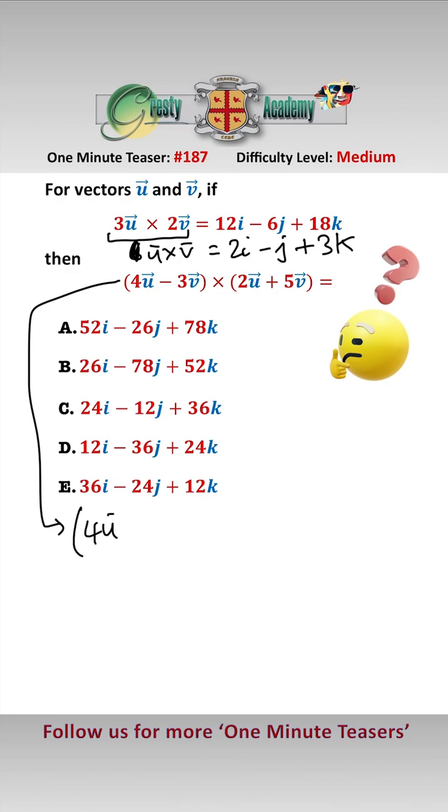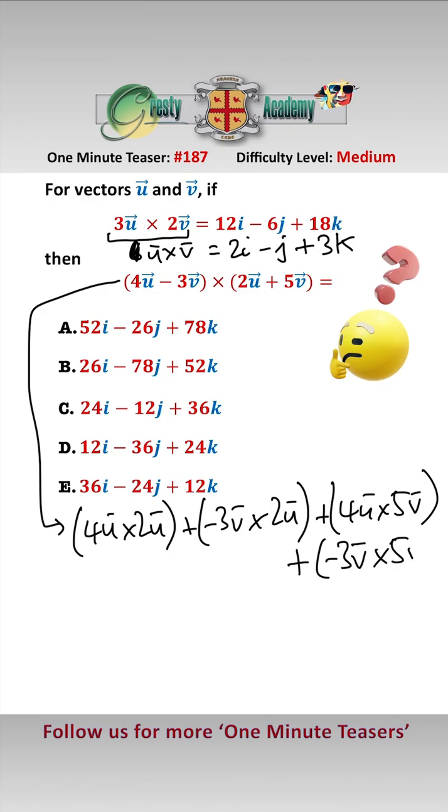we get 4u cross 2u add minus 3v cross 2u add 4u cross 5v add minus 3v cross 5v. Now, u cross u and v cross v are 0 by definition of the cross product, so that leaves us with